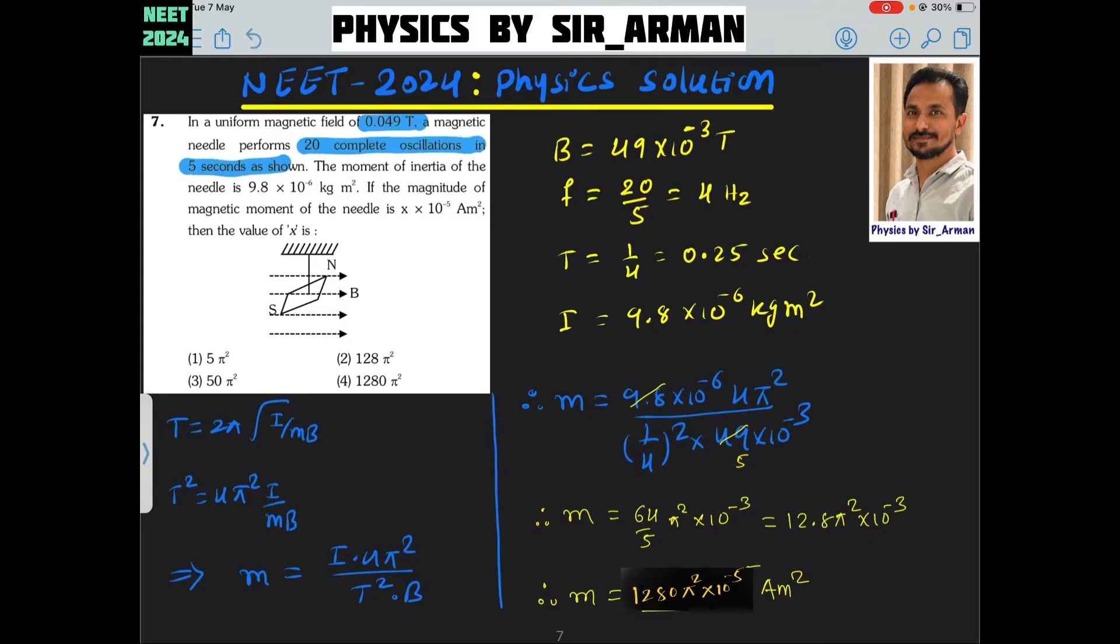Oscillations and time are given, so we can find out frequency. Frequency will be 20 number of oscillations, so 20 by 5, it is 4 hertz.